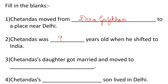Chetan Das's daughter got married and moved — she shifted to Palwal. Palwal is a city, a district in the state of Haryana. So whenever you are asked to locate Palwal, you will locate it in Haryana. Fourth one: Chetan Das's younger son lived in Delhi.